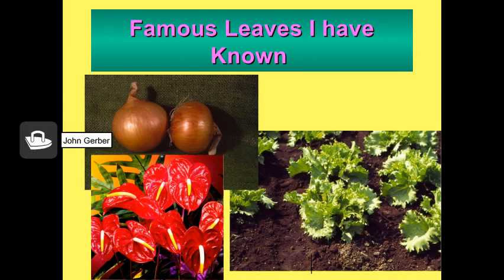Do you recognize the leaves here? Obviously the lettuce plants are leaves. What about onions? Think about cutting an onion in half — you can imagine each of those circular rings as a compressed leaf. And the so-called little boy plant, the red one — what looks like a petal to a flower is actually a leaf. These are some of the leaves I have known.